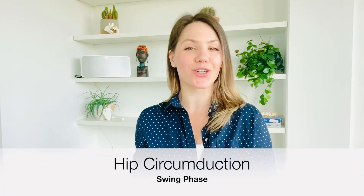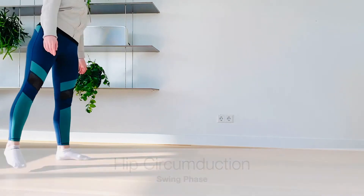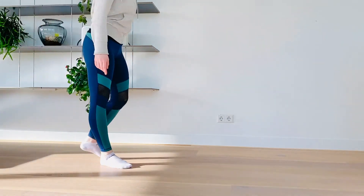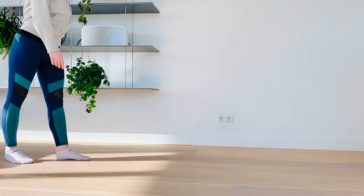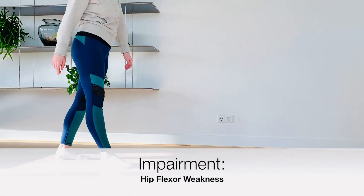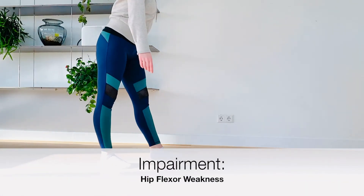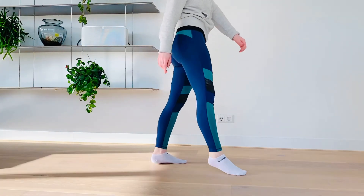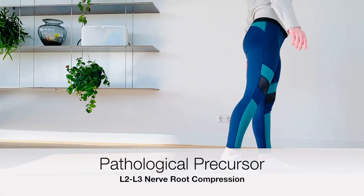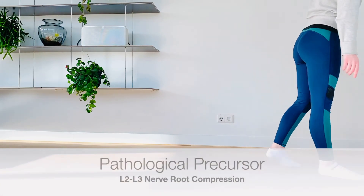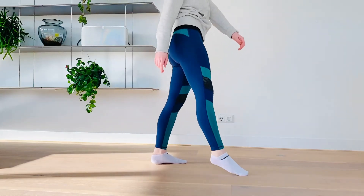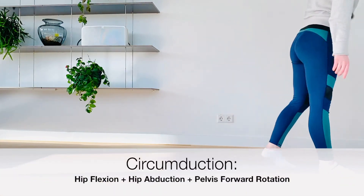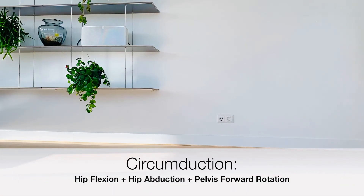The last deviation that we will observe is hip circumduction during the swing phase of the gait cycle. Here the likely impairment is hip flexor weakness, secondary to L2 or L3 nerve root compressions. A semicircle movement combining hip flexion, hip abduction, adduction, and forward rotation of the pelvis are observed here.